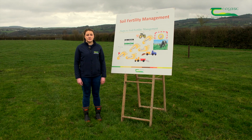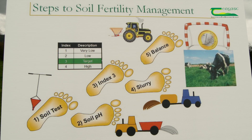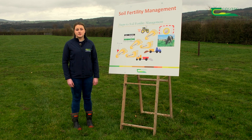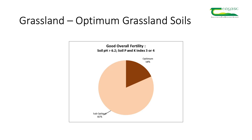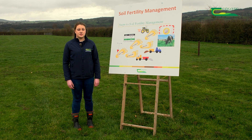The primary objective of every farmer is to maintain good soil fertility. To identify our soil fertility we must first do a soil test to identify our pH or lime status, our potassium or K, and our phosphorus or P. A recent soil test conducted by Teagasc indicated that the majority of Irish soils are sub-optimal in terms of pH, P, and K, leading to a reduction in output and a loss of profit for farmers.